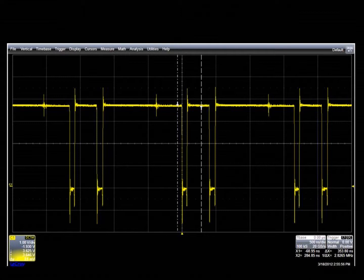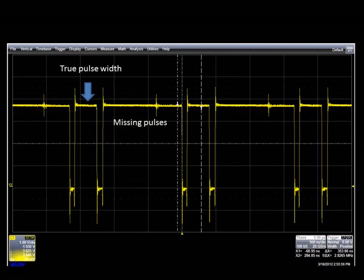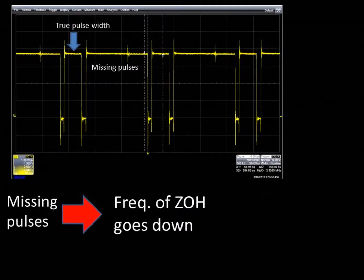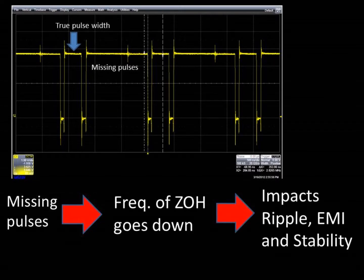This image, also taken from the same converter, shows other odd operational modes. In this case, the converter is missing several pulses on a regular basis. The missing pulses result in movement of the zero-order hold to a lower frequency during these periods. The end result is that the missing pulses will impact output ripple, EMI, and stability performance of the regulator.